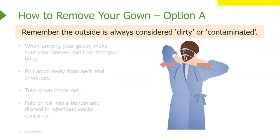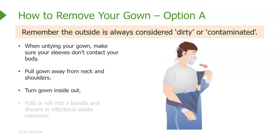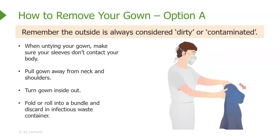There are two options for removing your gown — it's really personal preference. Remember the outside is always considered dirty or contaminated. After you've removed your gloves and eye shield, reach back behind you to untie the gown, making sure your sleeves don't contact your own body. Pull the gown away from your neck and shoulders, turn it inside out, fold or roll it into a bundle, and discard it in an infectious waste container.